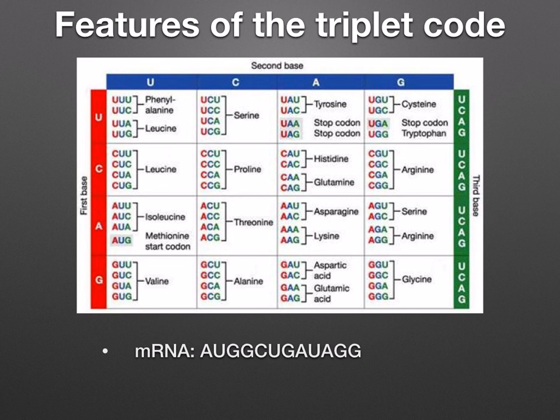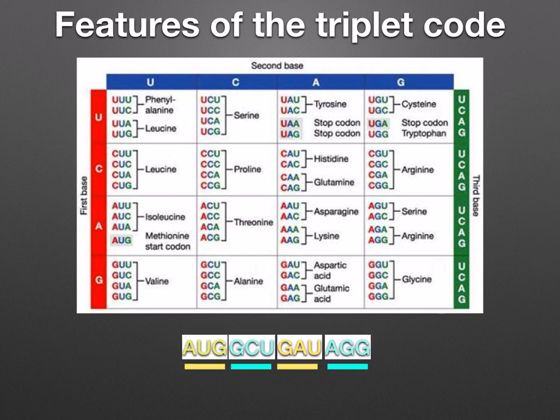How do you read a table like this? Well, if you're given an mRNA sequence, for example AUG, GCU, GAU, and AGG, you need to find the corresponding amino acid sequence using this table. The first step is to divide the sequence up into triplet codes, which have three letters per triplet. Then you look up each triplet in the table.